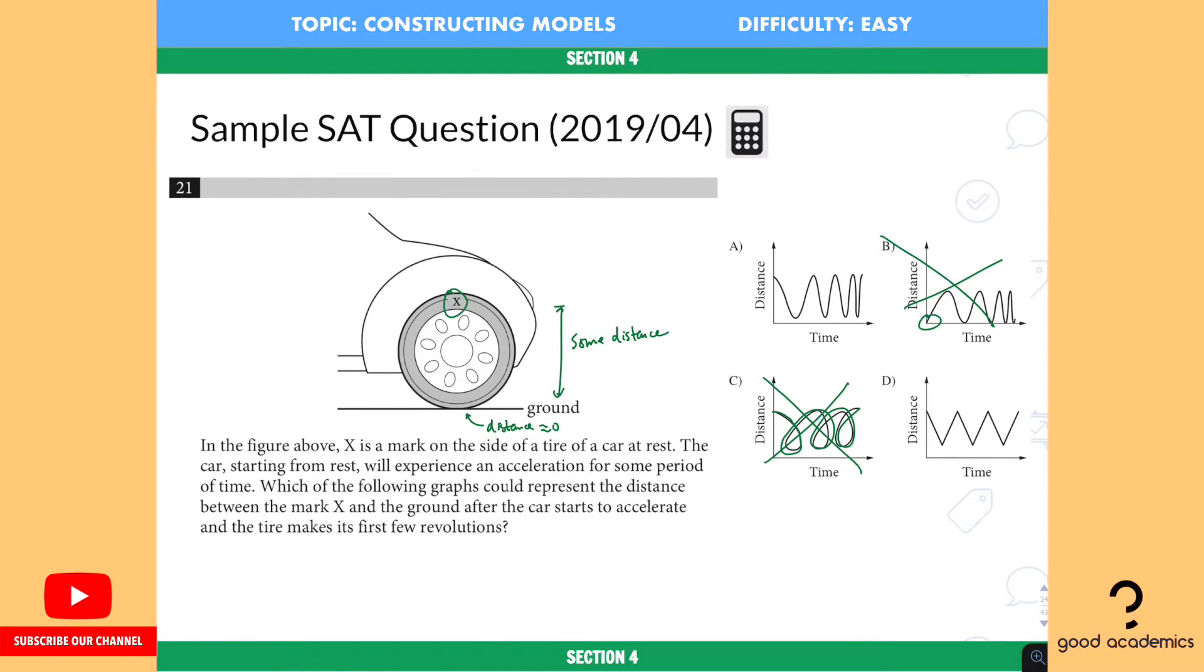So now we are left with A and D. So look at these two choices. How do I know which one is the answer? Well, the key word right here is the word acceleration. It's going to accelerate, meaning that the rotation of the tire will get faster and faster.